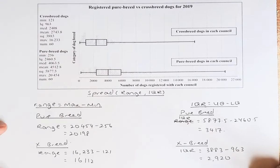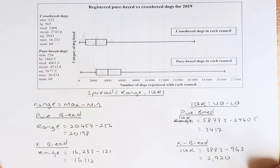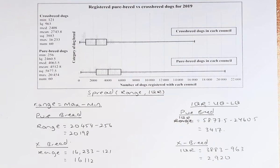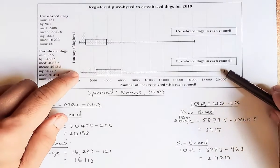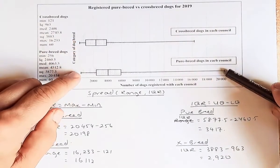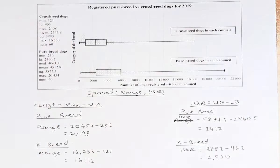For crossbreed, the range is the maximum 16,233 minus the minimum 121, coming to 16,112. From these figures, we can confidently say the purebred range is bigger, and you can see this from the graph — the range for purebred is wider than for crossbreed. Similarly, we are now looking at the interquartile range.